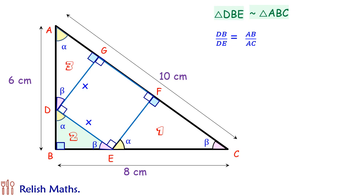DE is same as the side of the square, that is x. So putting the values we get DB upon x equals 6 upon 10, or we get DB as 3x upon 5.